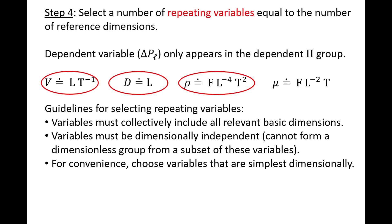It's important to note that there are other sets of repeating variables that also could have been selected. For example, v, d, and mu would also be okay. For now, we will proceed with using v, d, and rho as our repeating variables. At the end of this video, we'll discuss what would happen if you chose a different set of repeating variables. The decision to use the FLT system in step 4 was arbitrary, and using the MLT system also would have been okay.